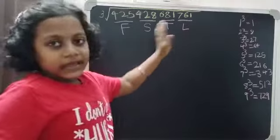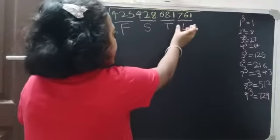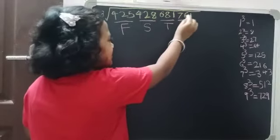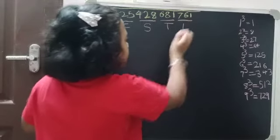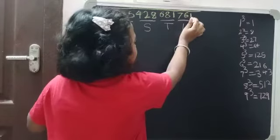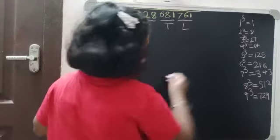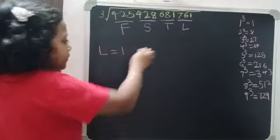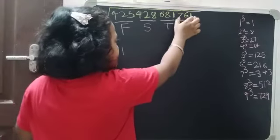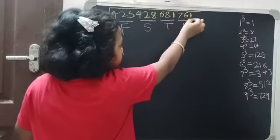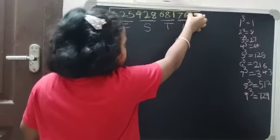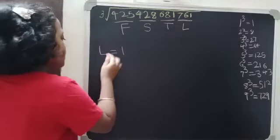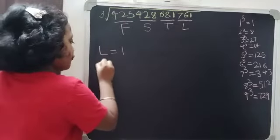First we have to solve L. Since the number in the last pair is 761, the last digit is 1. Since 1 cube is 1, L is equal to 1.